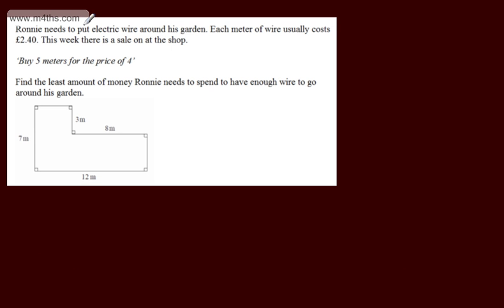In this question, we're told Ronnie needs to put electric wire around his garden. Each meter of wire usually costs £2.40. This week there's a sale on at the shop: buy 5 meters for the price of 4.